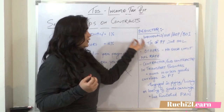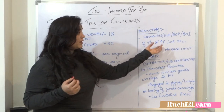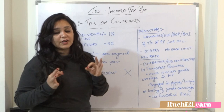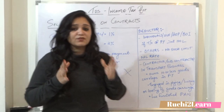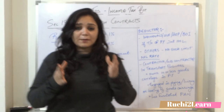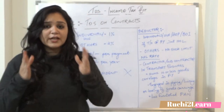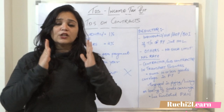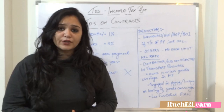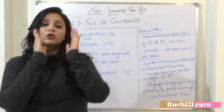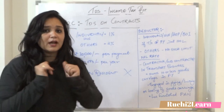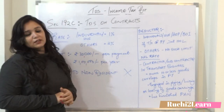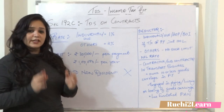Looking at this section, the tax audit of the previous year applies if the turnover of the previous year is more than 100 lakhs, that means 1 crore. So if turnover is 1 crore, then you will have a tax audit. You will see the tax audit under this section in the TDS data.